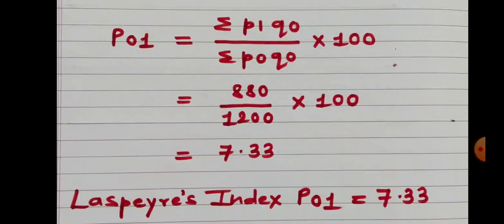Now apply the formula of Laspeyres price index number: P01 is equal to Sigma P1Q0 divided by Sigma P0Q0 into 100. Sigma P1Q0 is 880 and Sigma P0Q0 is 1200. So 880 divided by 1200 into 100, we get 73.33. So Laspeyres price index number is 73.33.